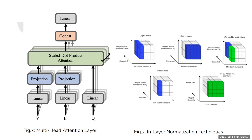The decoder functions in a similar fashion to the encoder, but an additional attention mechanism is inserted, which draws relevant information from the encodings generated by the encoders. The transformer must not use current or future output to predict an output, so the output sequence must be partially masked — because if all output is used, like words in a machine translation project, there will be no learning. The last decoder is followed by a final linear transformation and softmax layer to produce the output probabilities over the vocabulary. After each block in the encoder-decoder architecture, layer normalization is done because the sequence length is unknown in both input and output data.